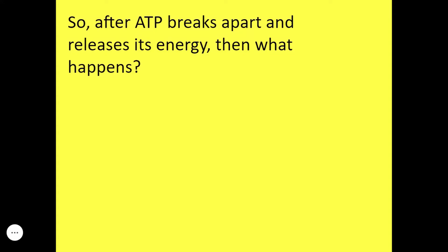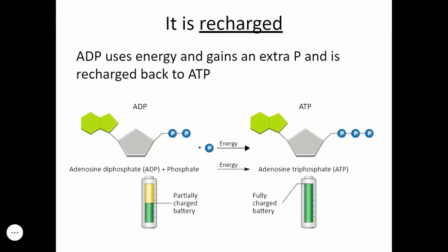After ATP breaks apart and releases energy, what happens? ATP releases its energy and it gives us ADP. And then what? It's recharged, just like a battery. ADP uses its energy and then it gains an extra phosphate and is recharged back to ATP. And we talked about this in the ADP to ATP cycle in photosynthesis. You can think of ADP as being like a partially charged battery, while ATP is a fully charged battery.